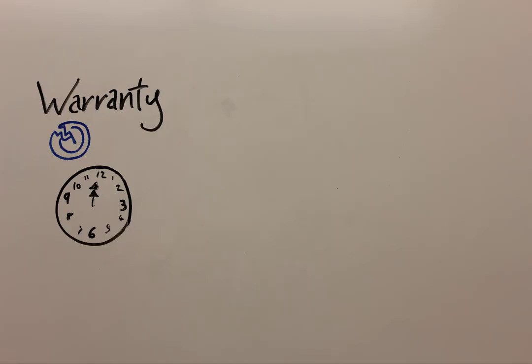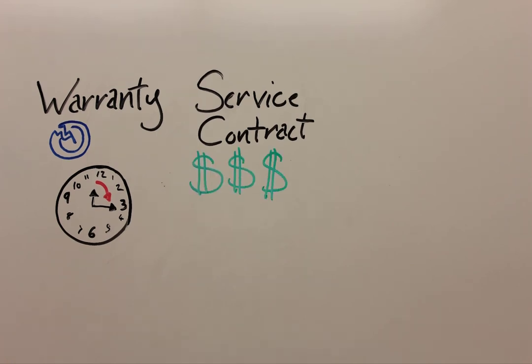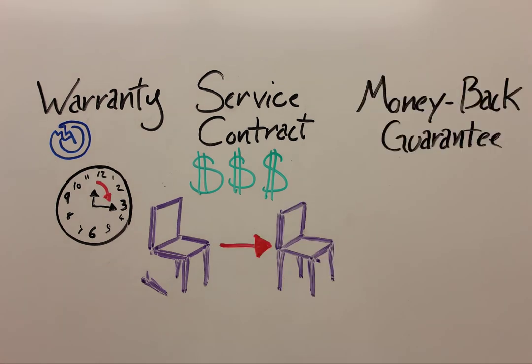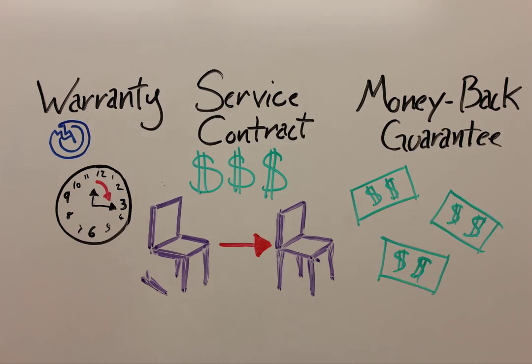A warranty is the promise of the seller to fix or replace a good for a certain amount of time after the purchase. A service contract requires the buyer to pay more and the seller to fix any issues with the good after a set time period. And a money back guarantee is a promise for a full refund if a buyer is not satisfied with it.